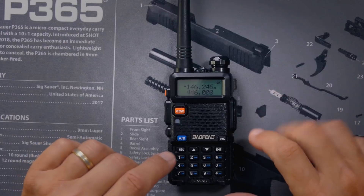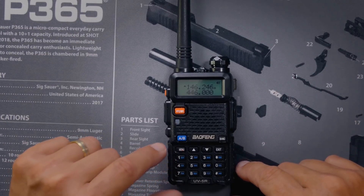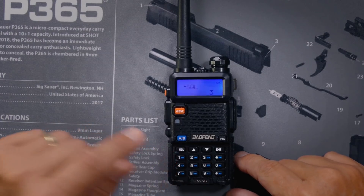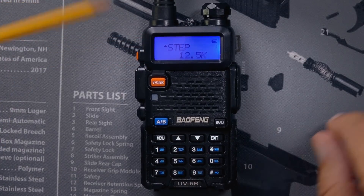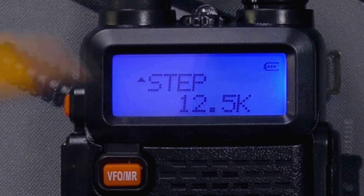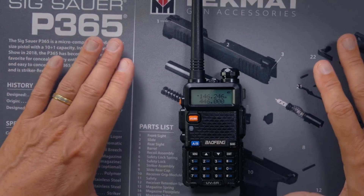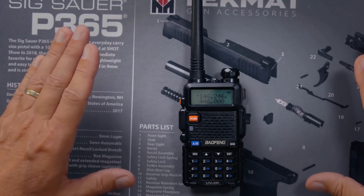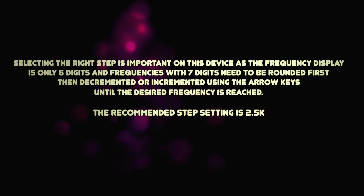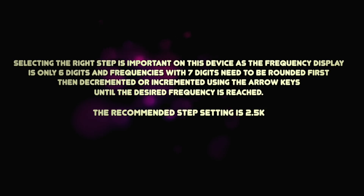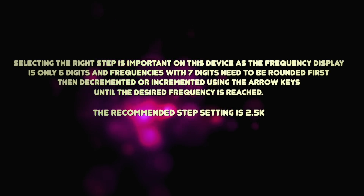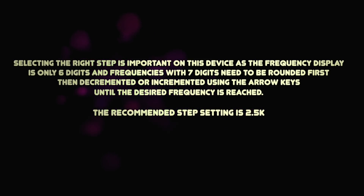But what if those numbers go up or down too much, or you're using an older Baofeng UV-5R that doesn't have the new AI built in? That's when the step menu option comes in — menu option number one. We can get there by hitting the menu button, which brings us to menu option zero, then hit the up arrow key to reach menu option one, which is the step function. If you read the instructions or go to the Baofeng website, it says selecting the right step is important as the frequency display is only six digits, and frequencies with seven digits need to be rounded first, then decremented or incremented using the arrow keys until the desired frequency is reached. The recommended step setting is 2.5 kHz.